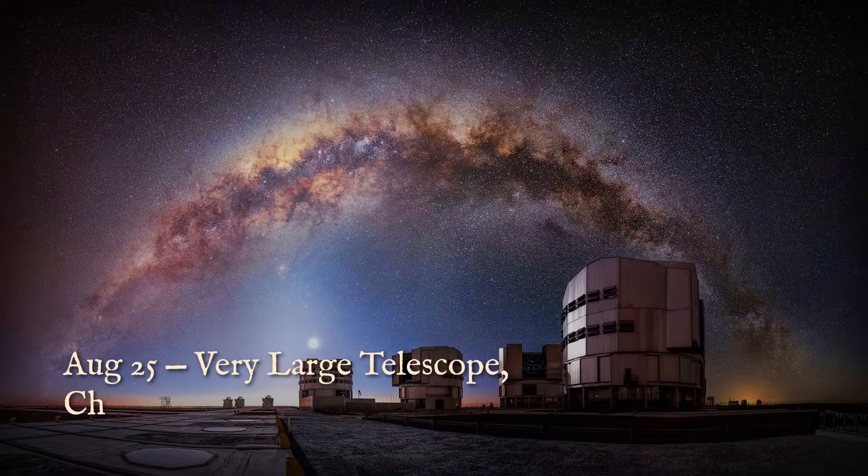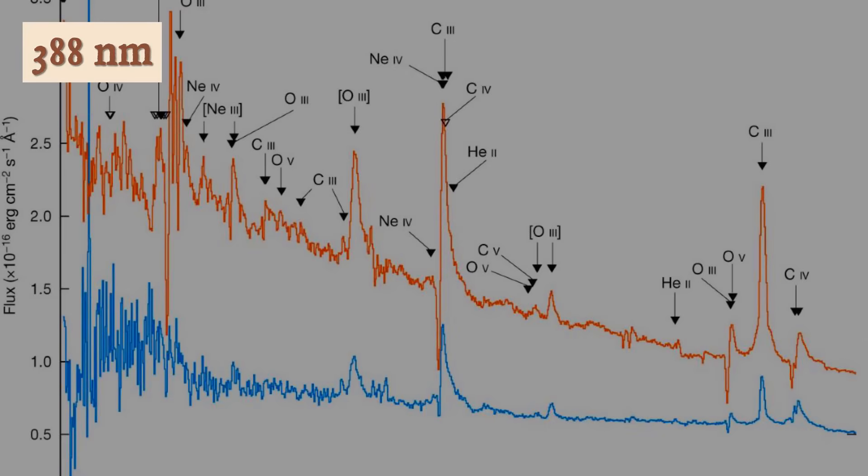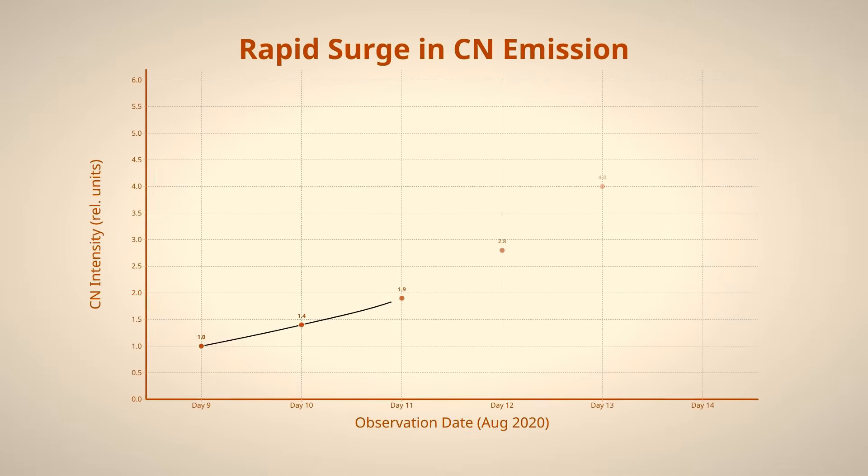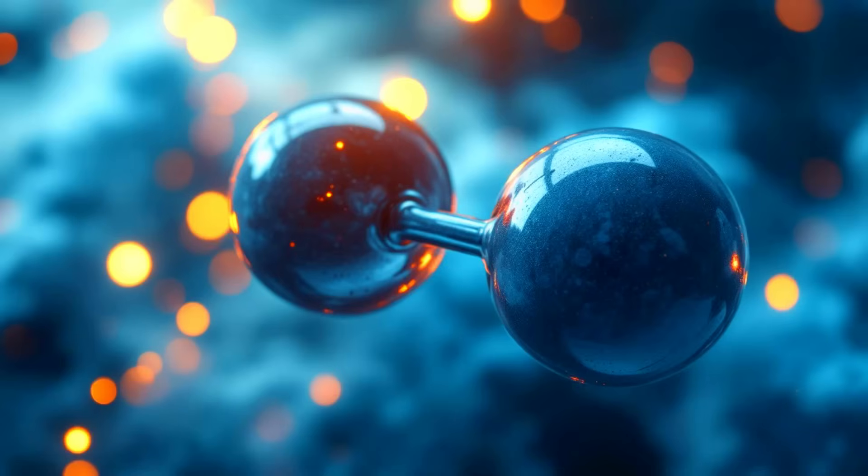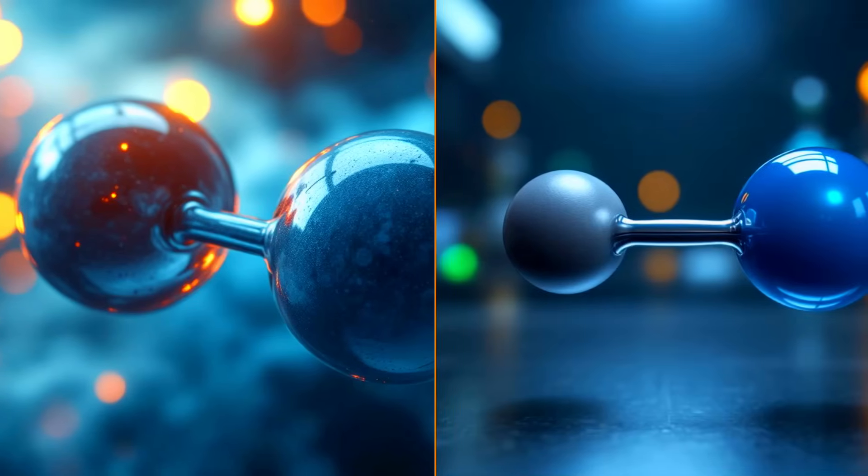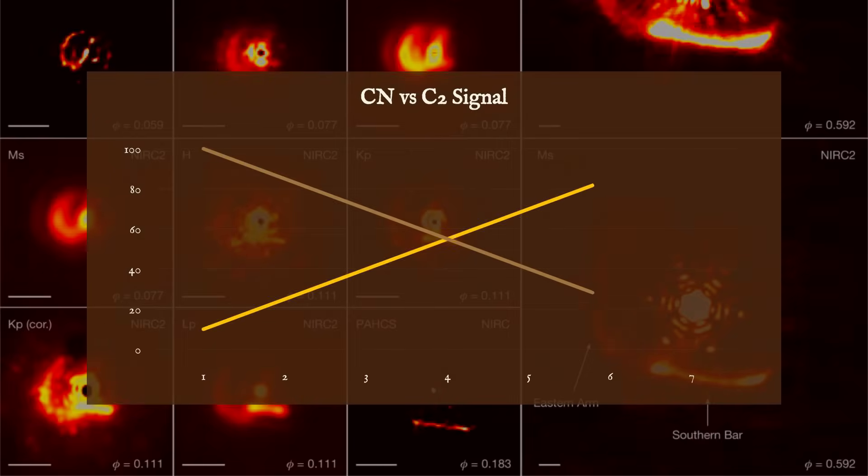On August 25th, the Very Large Telescope in Chile captured a sharp spike in cyanide emission from 3I Atlas. The spectrograph readings zeroed in on the 388 nanometer line, where the intensity of CN shot up by more than a factor of 10 in just a few nights. This wasn't the usual dicarbon signature seen in green comets from our solar system.